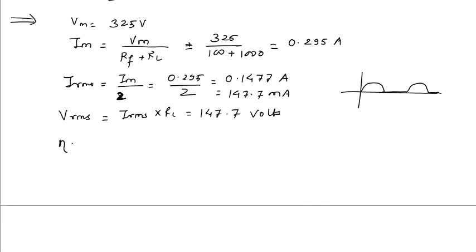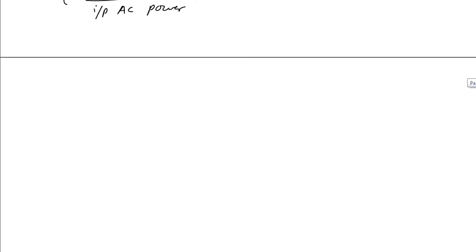Now the efficiency will be output DC power by input AC power into 100 percent. Output DC power will be equal to IDC square into RL, and input AC power will be equal to IRMS square into RF plus RL.